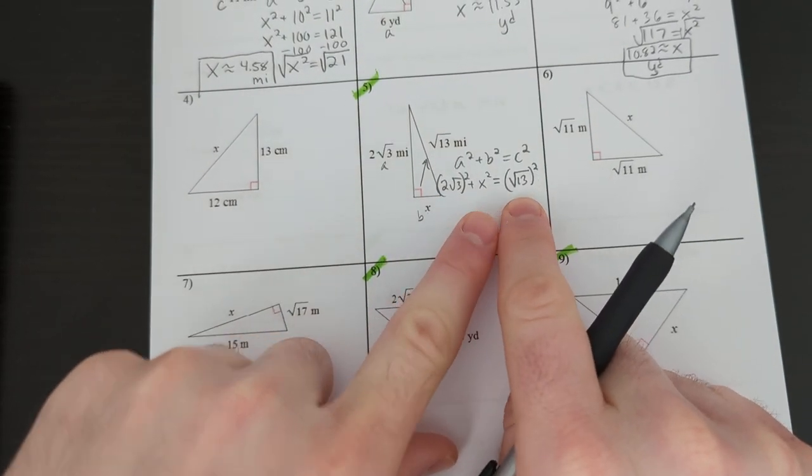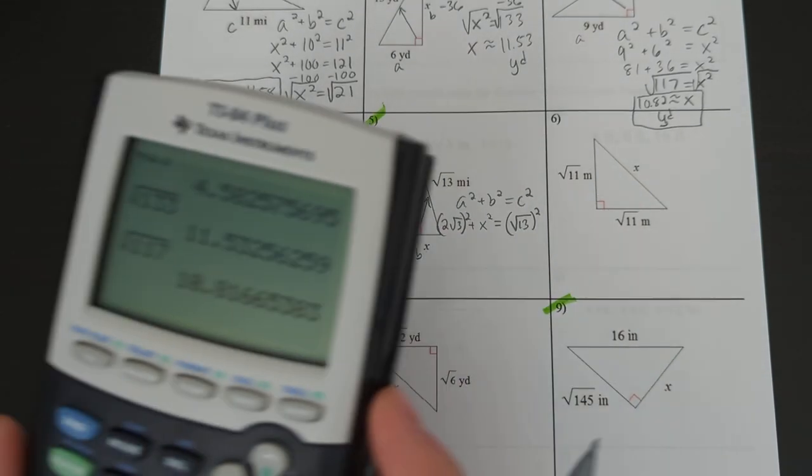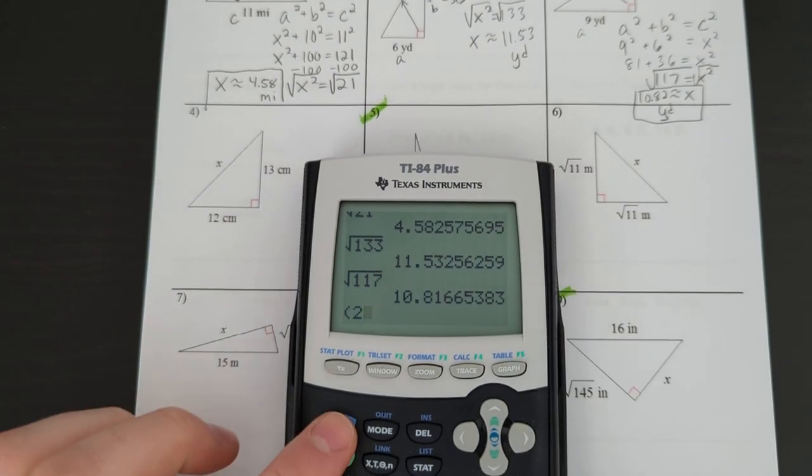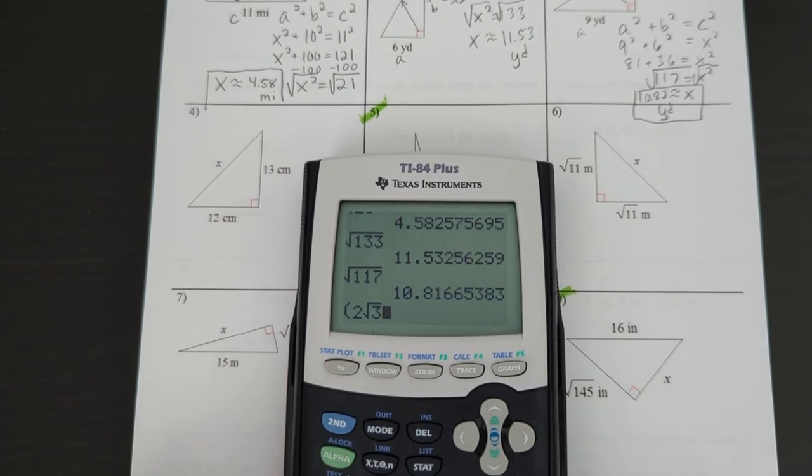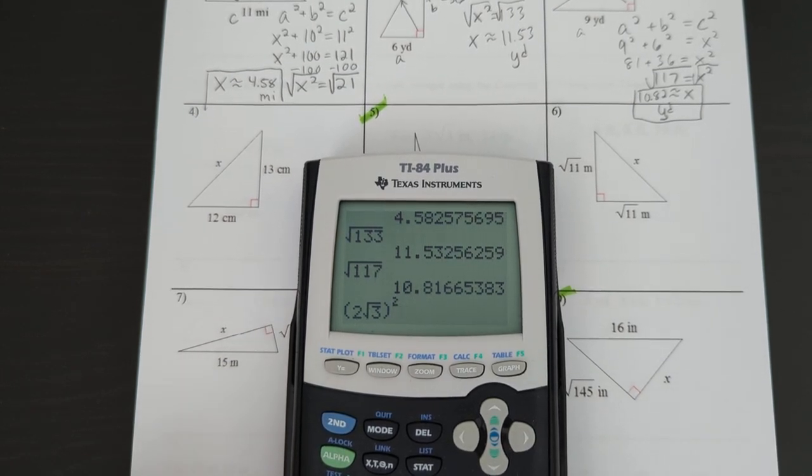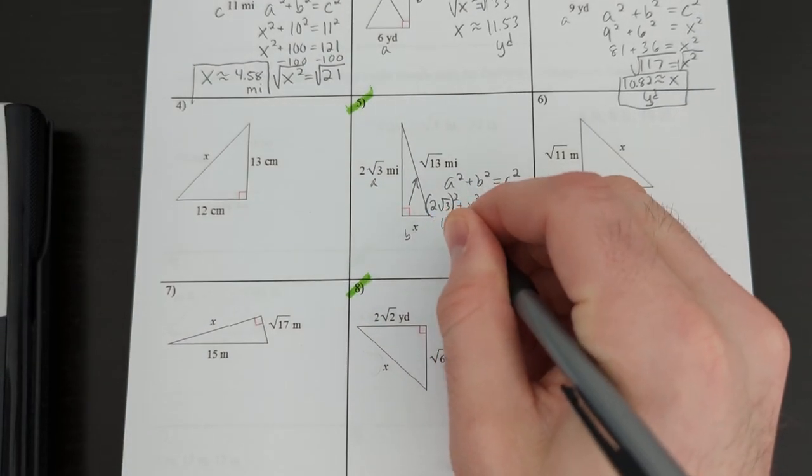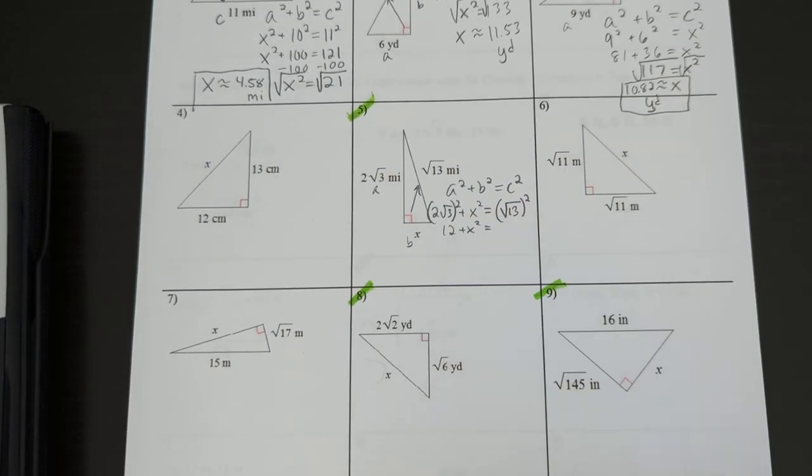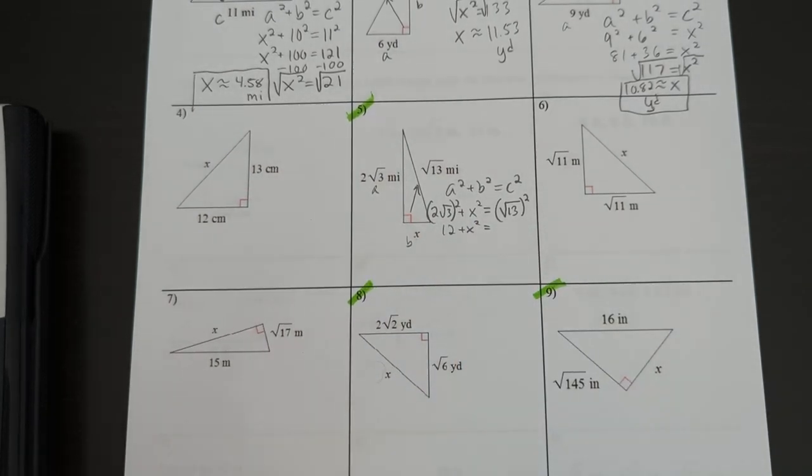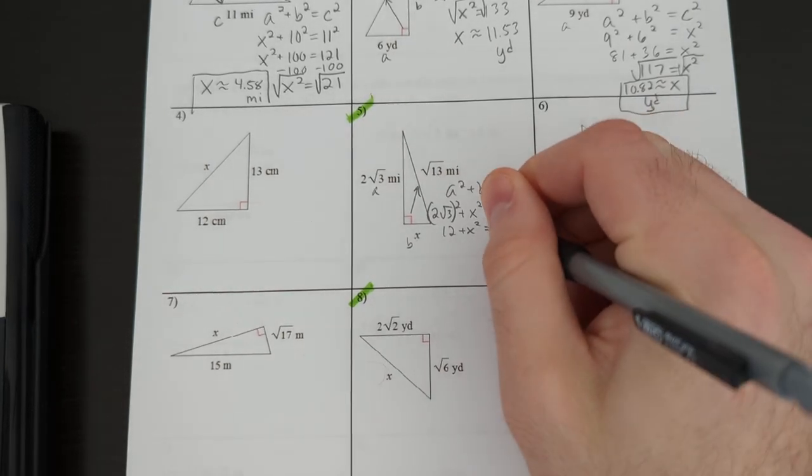Now, to calculate these, you're simply going to just type them in as you see them. Parentheses, 2, square root 3, squared, you get 12, plus x squared. Now, this one, whenever you have a radical by itself, not like here where we have 2 root 3, but let's say you just have square root of 13, the square root of 13 squared is just 13.